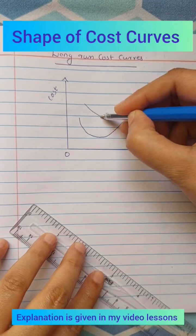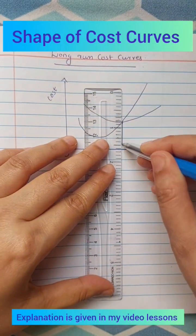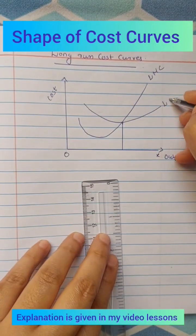Long run MC curve is U-shaped curve. Long run AC curve is also U-shaped curve.